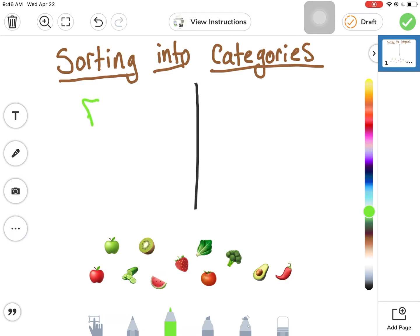One way is we could say anything that is a fruit goes over here, and anything that is a vegetable goes over here.